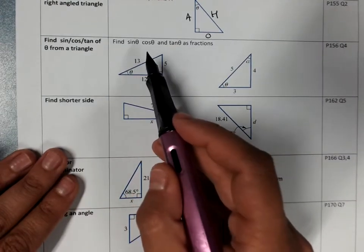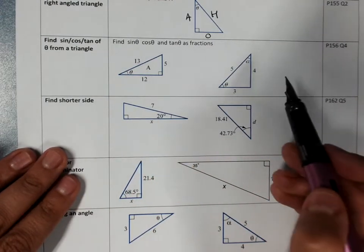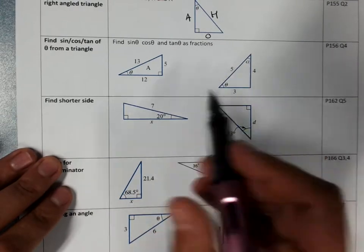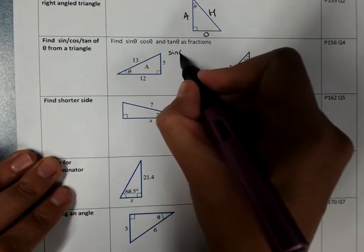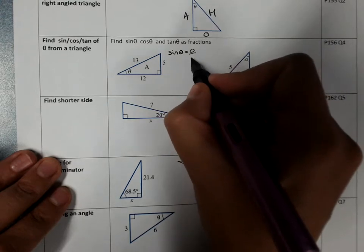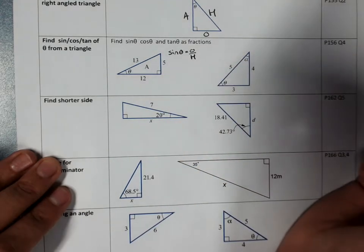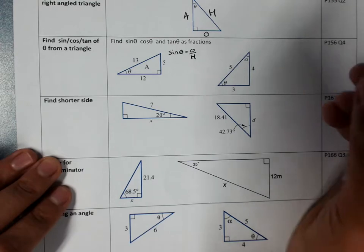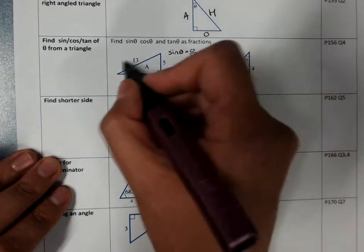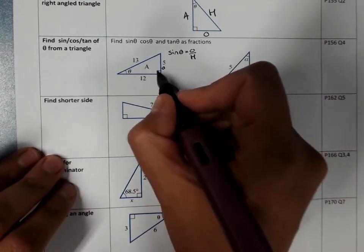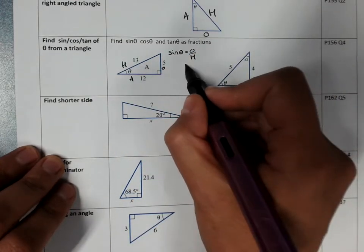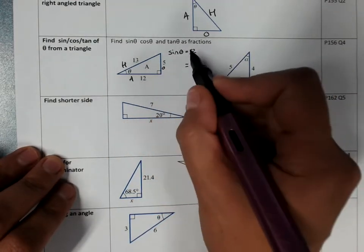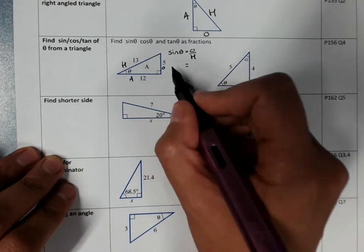Find sine theta, cos theta, and tan theta as fractions. It's a good idea to write the ratio first. Label our sides, of course. Opposite, adjacent, and hypotenuse. Opposite over hypotenuse, 5 over 13.